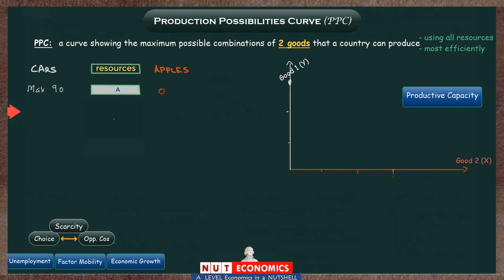Because this country can choose to use these resources in a different way. If they want to make 100 apples, the whole idea this model captures is that you can't just make more apples while still making 90 cars — your resources are limited. In scenario A you've used all your resources for 90 cars, so if you want to make 100 apples, you will have to reallocate some resources towards apples and take them out of car production. That is, you will have to give up some cars. In scenario B, producing 100 apples, you will only be able to make 60 cars.